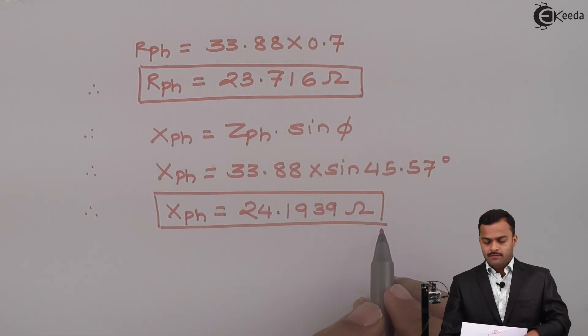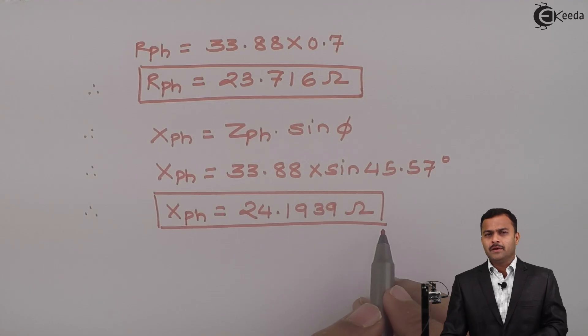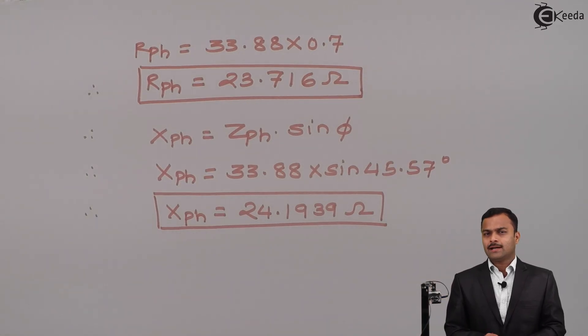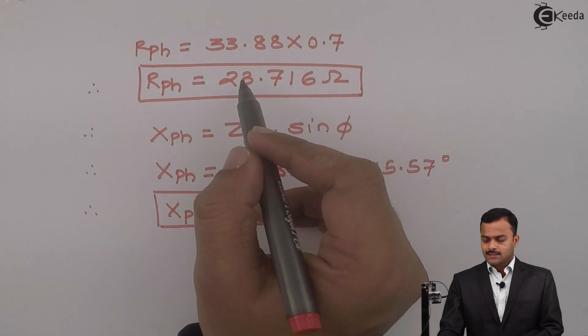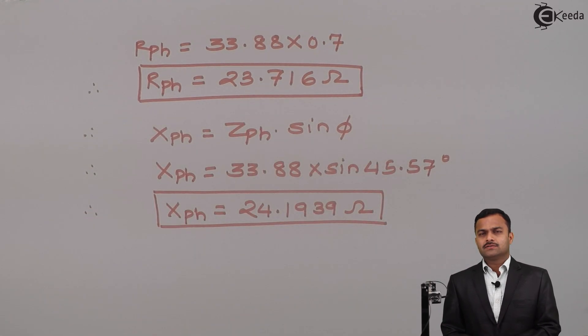I will restrict my calculation only up to reactance because frequency is not given and we cannot assume it as 50 hertz. Secondly, they just said power factor is 0.7 leading. That does not mean you can say only capacitor is present; it could happen that capacitor as well as inductor is also there but Xc dominating XL. So to avoid this confusion, we will consider simply a reactance XPh equal to 24.1939 ohms. These are the two circuit elements.